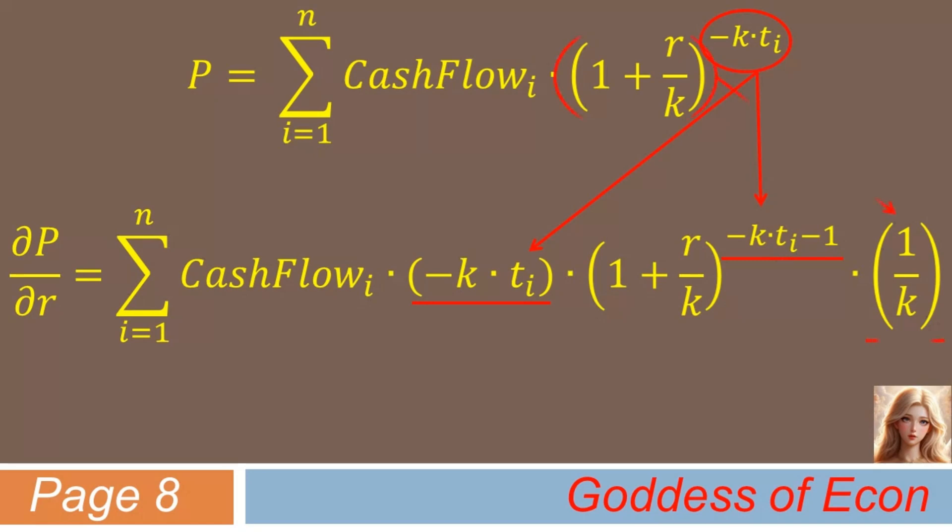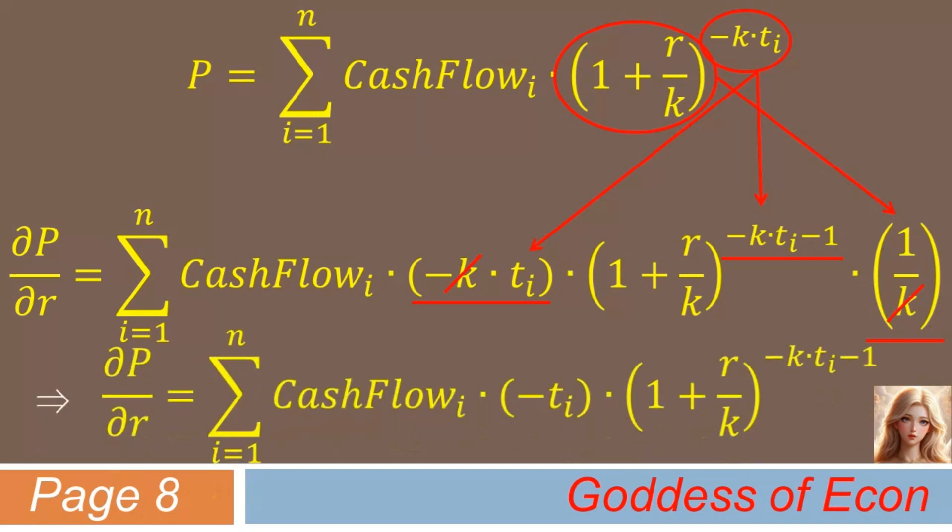Next, what do you do? You differentiate what's in the parenthesis with respect to r, and then multiply the whole thing by it. Here, if you differentiate what's inside the parenthesis, you get 1 over k. Also, please note that the ks here simply cancel out, simplifying the formula further to the following. Now, doesn't look too bad, does it? Let's do some more tricks to simplify it further.